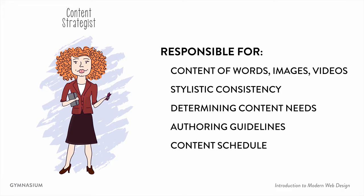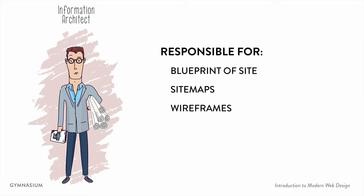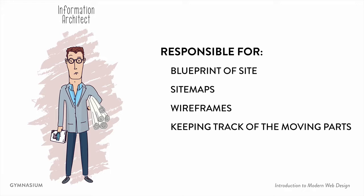In many ways, the content strategist is looking at the big picture in terms of what is the message the site is trying to get across and how do we do that most effectively. The next role is the information architect, who typically works closely with a content strategist — they may even be the same person in some instances — and they work to build the blueprint for the site. Often they'll create documentation like site maps or wireframes, and they architect how the different pieces fit together and how they work together.